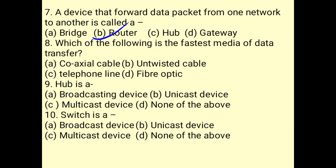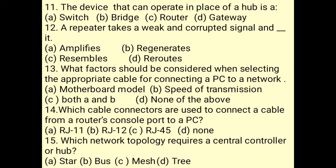Fiber optic is the fastest media for data transfer. A hub is a broadcasting device, while a switch is a unicast device. A switch can operate in place of a hub. A repeater takes a weak or corrupted signal and regenerates it.